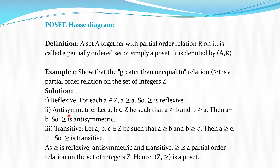For antisymmetry, we consider two elements A and B in Z such that A is related to B and B is related to A. This means A ≥ B and B ≥ A. If both occur simultaneously, it means A = B. So the relation is antisymmetric.